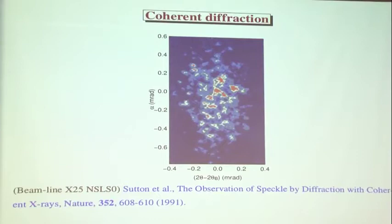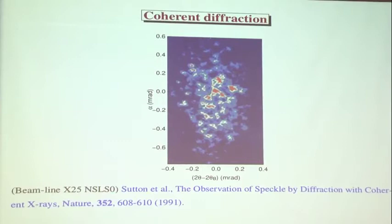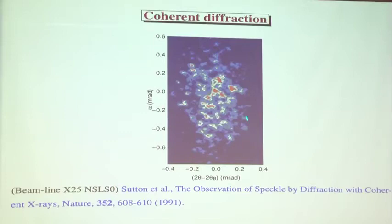An XPCS experiment is simply a diffraction experiment where the finite size of your sample determines the resolution — a diffraction-limited experiment. We actually did this at NSLS. Here is a speckle pattern taken with X-rays off antiphase domain walls in Cu₃Au. There are three length scales: an envelope in x corresponding to 2π over the domain size in x, an envelope in y, and then the sharp speckle features. If you want to measure intensity changes in speckles, you make your detectors equal to the speckle size.